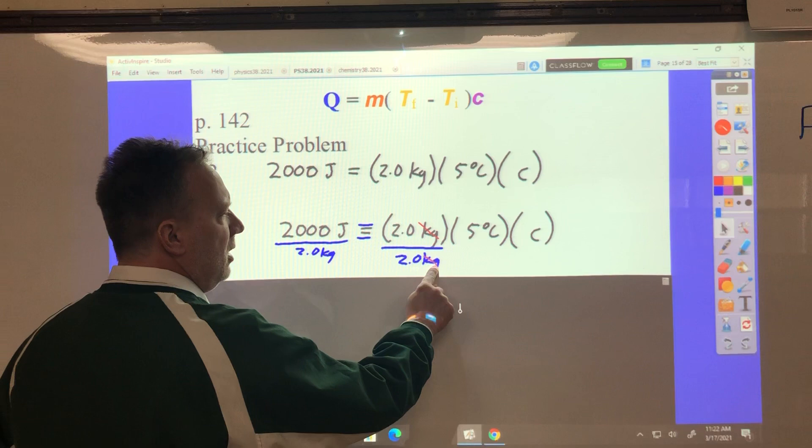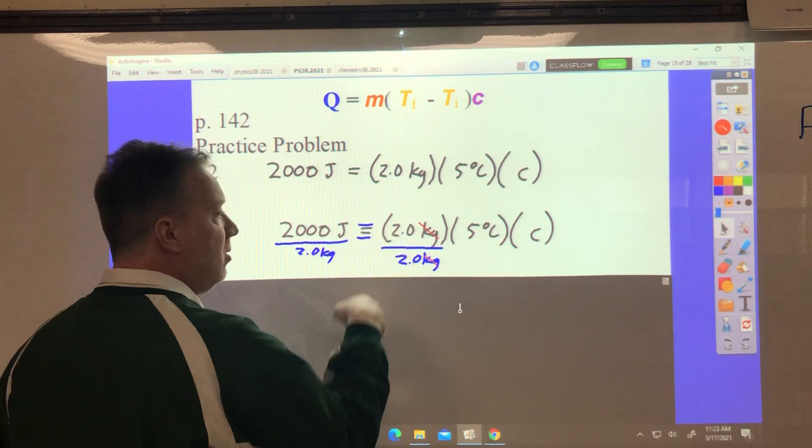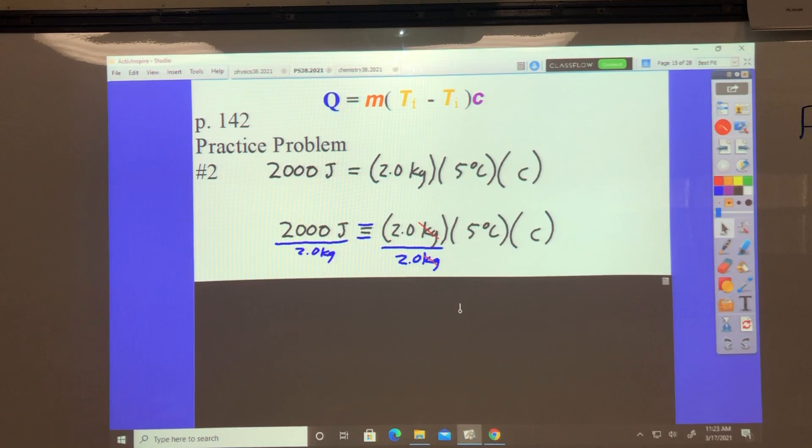So if I divide this side by 2 kilograms to be equal, I have to divide this side by 2 kilograms. Kilograms cancels, the 2 cancels, and 2,000 joules divided by 2 is 1,000 joules over kilograms. Then I'll divide both sides by 5 Celsius.